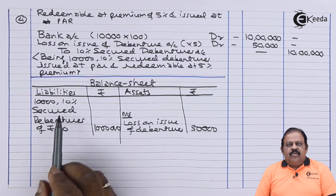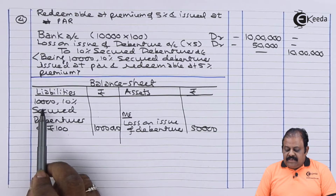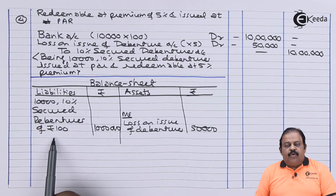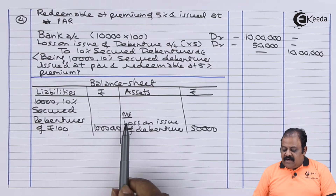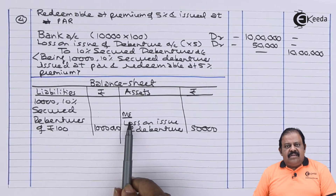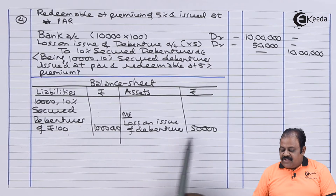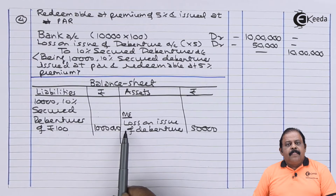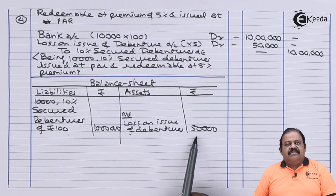On the liability side, we will be showing under the heading long-term borrowings: 10,000 10% secured debentures of Rs. 100 each, amount is 10 lakhs. On the asset side, under the heading miscellaneous expenditure, loss on issue of debenture Rs. 50,000 — instead here we can write premium on redemption of debenture.